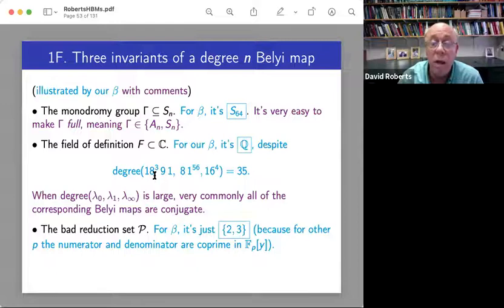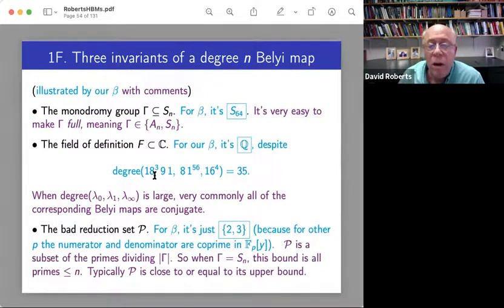So then there's the bad reduction set. So for beta, as I hinted at, it's just two, three. So you can see this by computing some discriminant and factoring it. But another way to see it is just look at what I wrote on the previous slide and interpret the numerator and denominator in FP of Y.